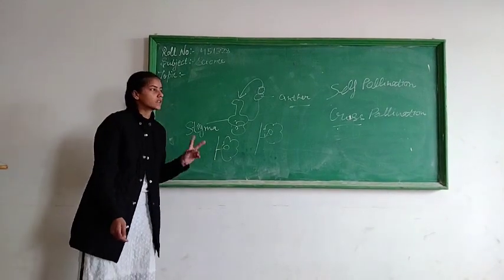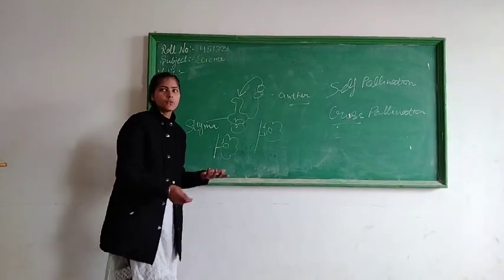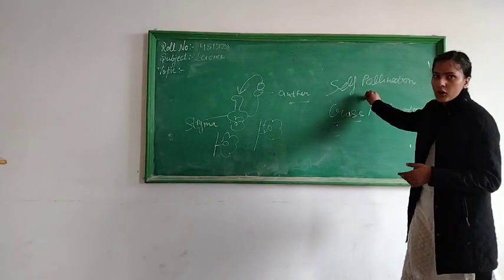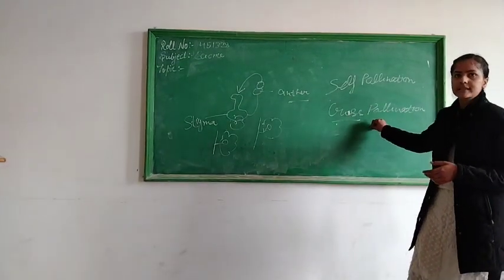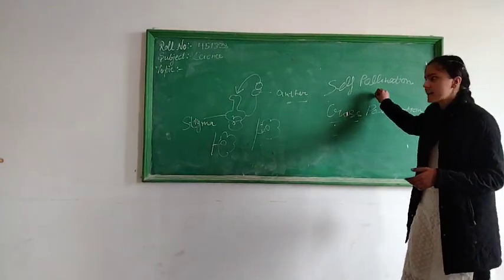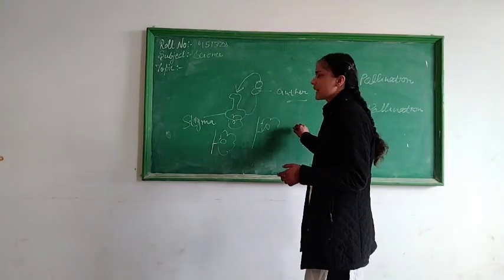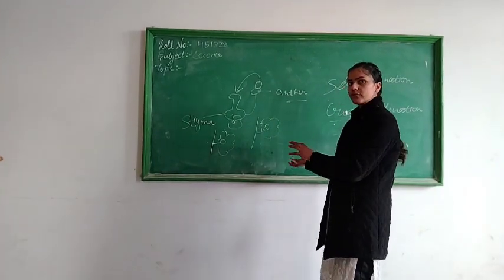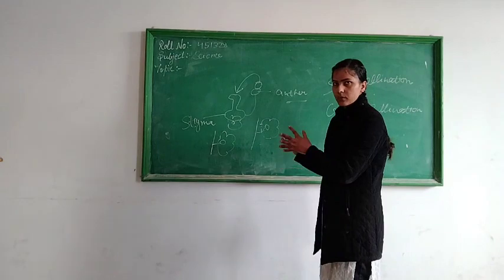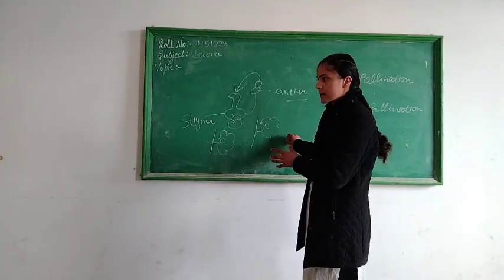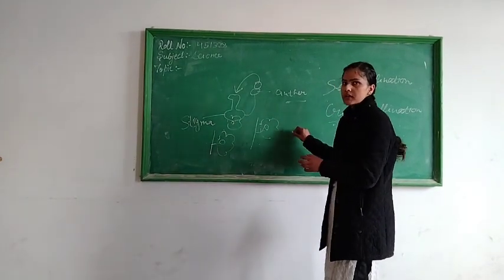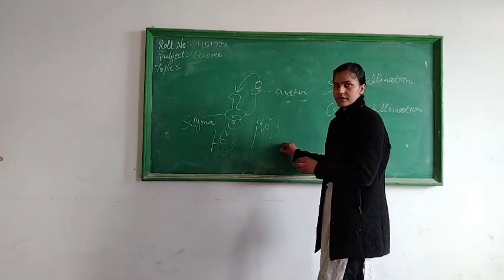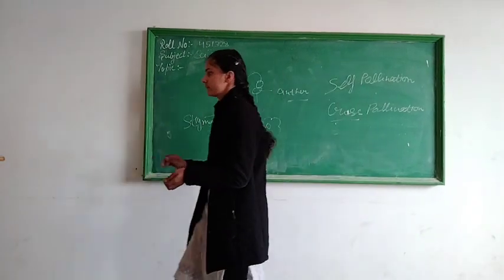Do you understand the types of pollination? Yes, ma'am. Which types of pollination? Self-pollination and cross-pollination. Self-pollination means the same plant undergoes the pollination process within itself. Cross means one plant to another. Understood? Yes, ma'am.